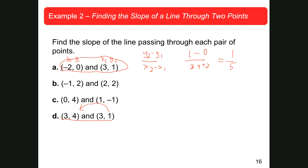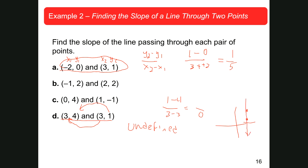I've got 1 minus 4 over 3 minus 3. Uh-oh — 3 minus 3 is 0. I know anytime I have a 0 on the denominator, it's undefined. Undefined slope. Now if I graph this out, guess what? 3, 4 is here and 3, 1 is here. If I connect them, it's a vertical line. Kind of makes sense, right? Because if the slope is undefined, it must be a vertical line. If you plot those two points and graph it out, sure enough, it is a vertical line.